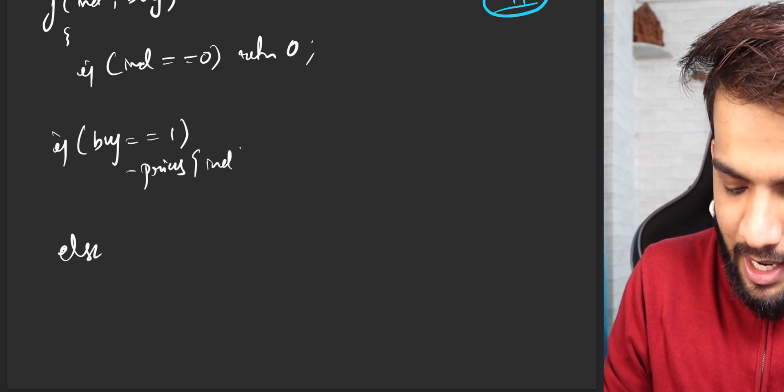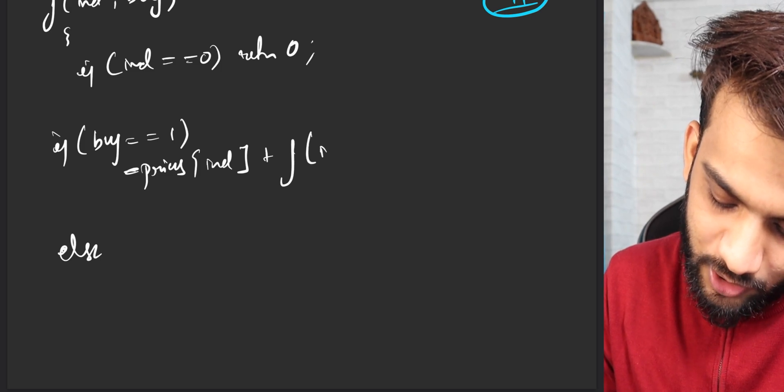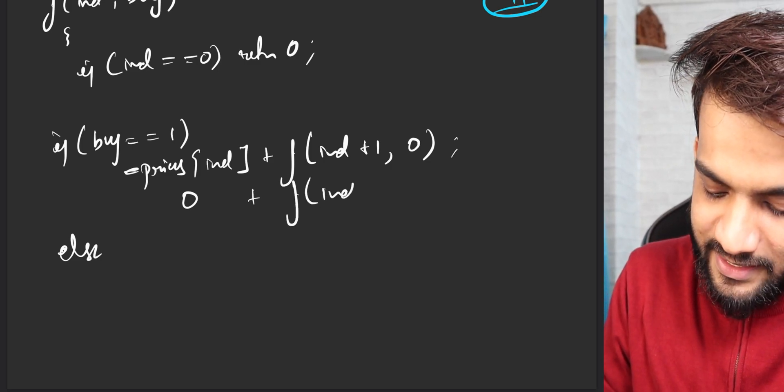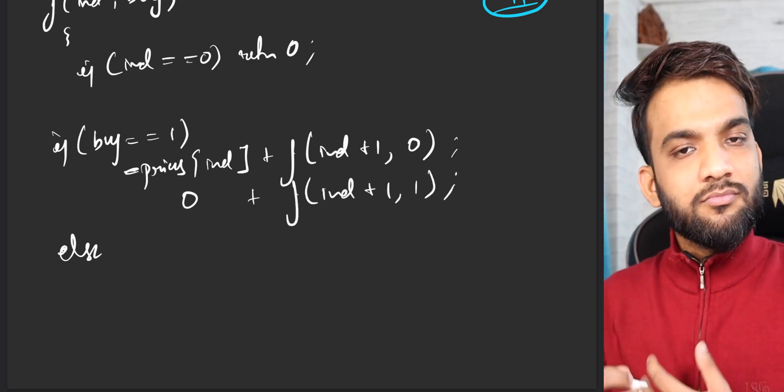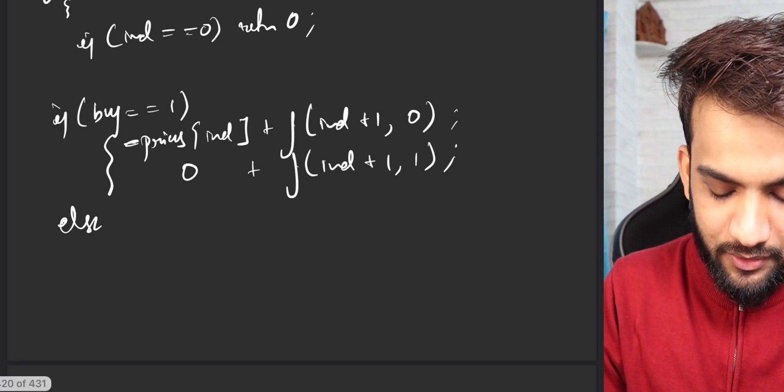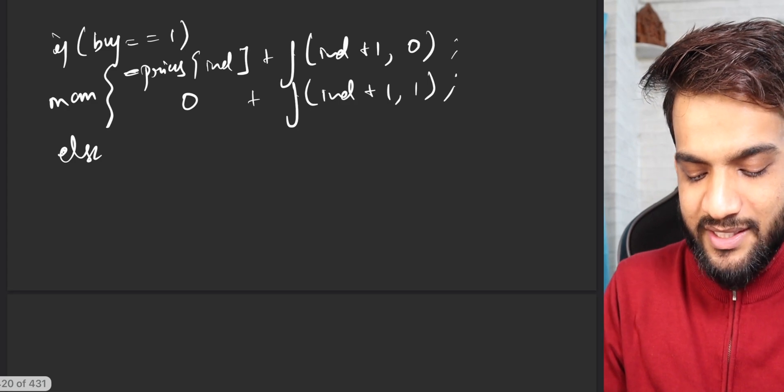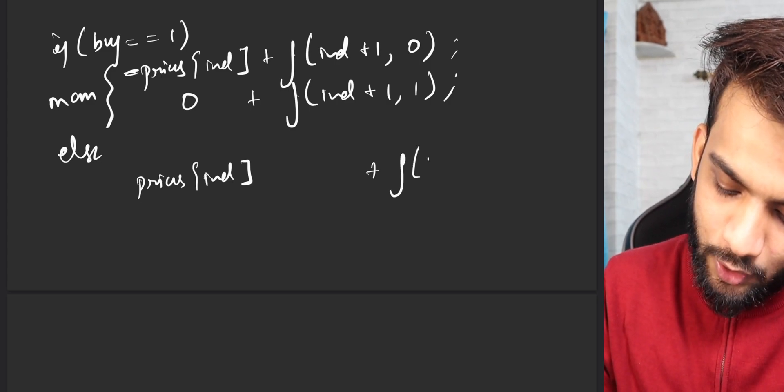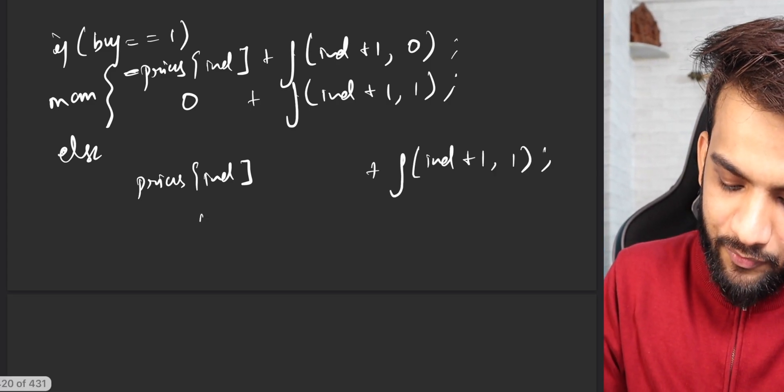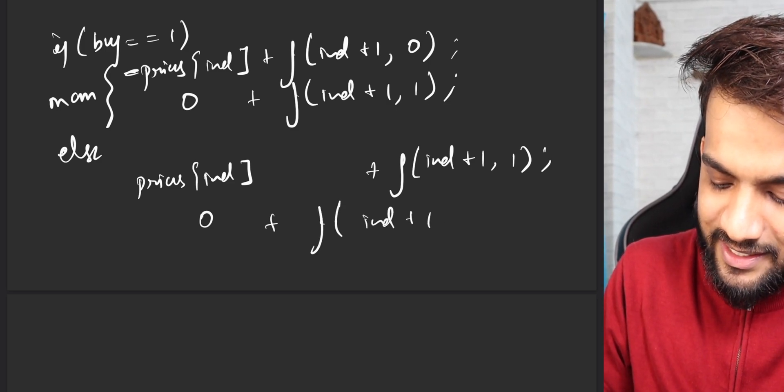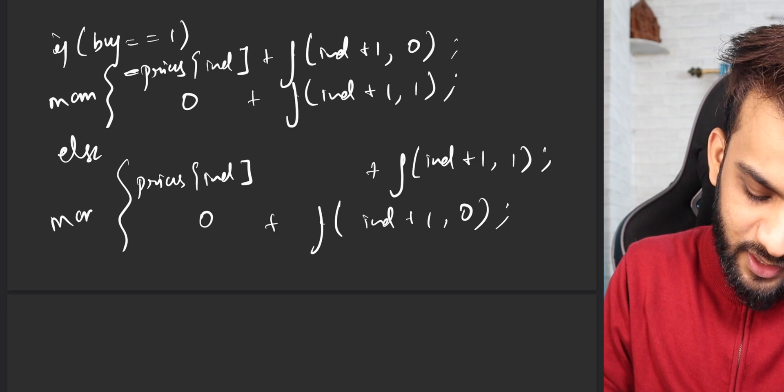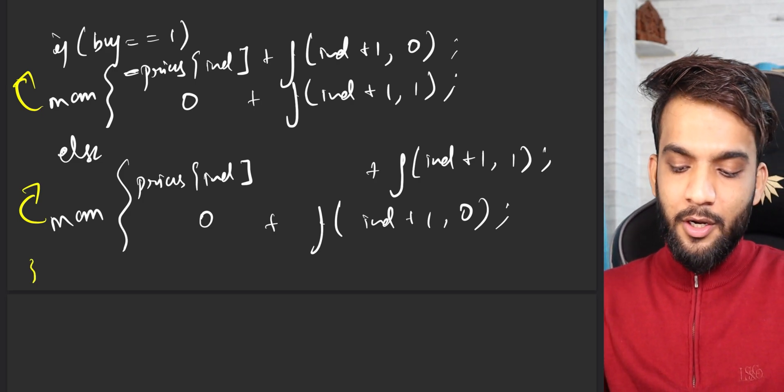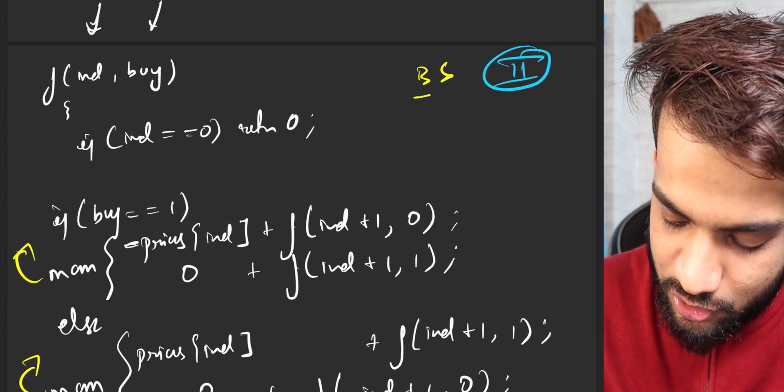And over here, if you buy, you end up giving to the market, so thereby minus, plus you go to the next day, index plus 1, and now you're allowed to sell. And if you don't buy, you go to the next day and you say you're still allowed to buy, and you return the max of it. And if you're selling, you get this from the market. If you're selling, you get this from the market and you go to the next day and you say you can now buy. Or if you're not selling, you go to the next day and you say you can still sell, and you return the max of it. That's what was the code for buy and sell stock 2.